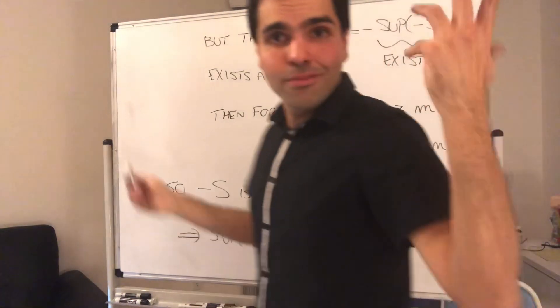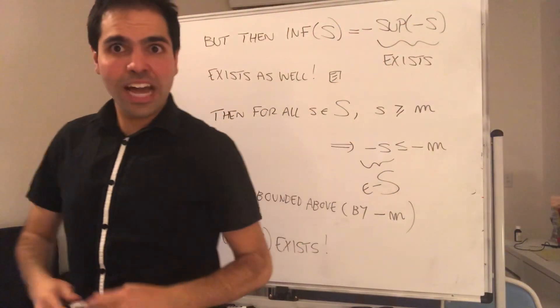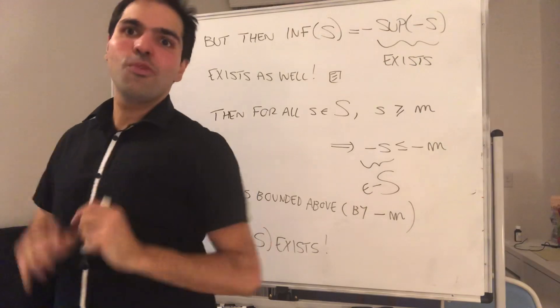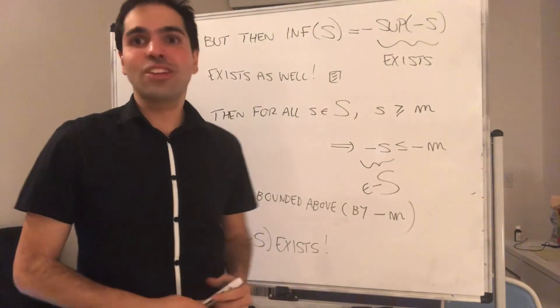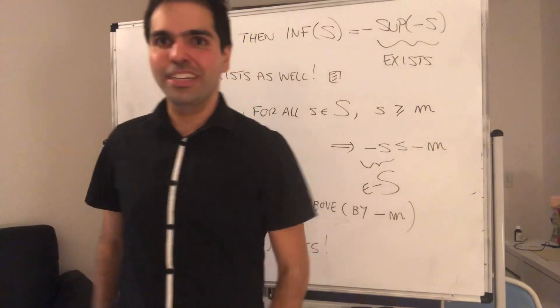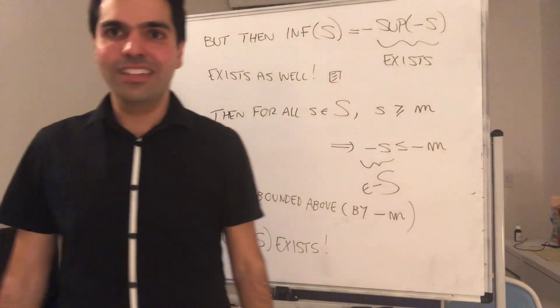Quick and easy — we never show directly that the infimum exists; we just use the fact that the supremum exists and apply this little formula. Next time, we'll do even more applications of the least upper bound property to show why it's useful. Thank you.